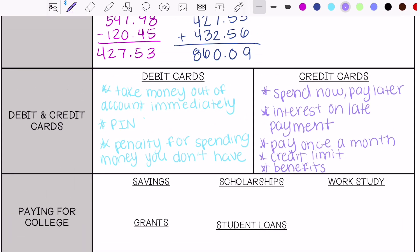Paying for college. There are different ways you can pay for college, different options. Savings is money you set aside for college, money you saved.